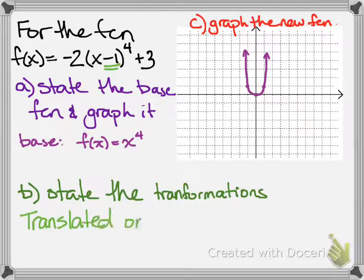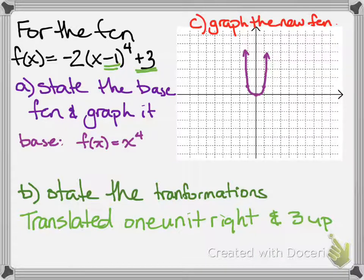Okay, so if we look at stating the transformations, well that -1 up there tells us that it has to be translated one unit to the right. The +3 tells us three units up.